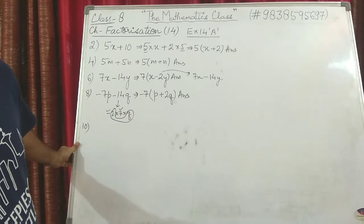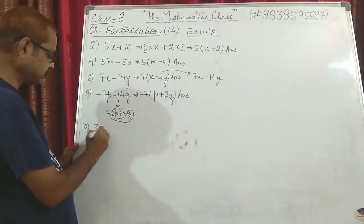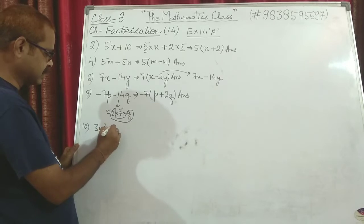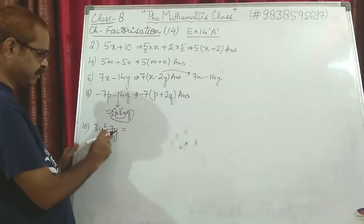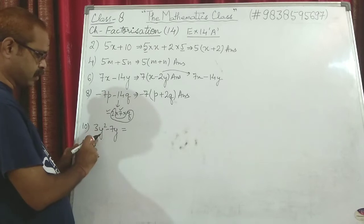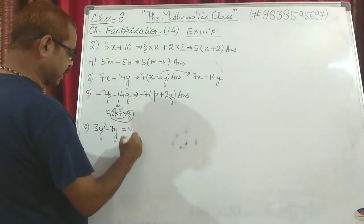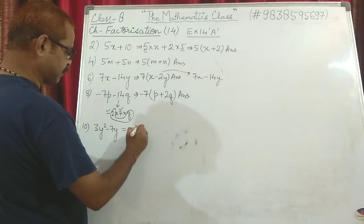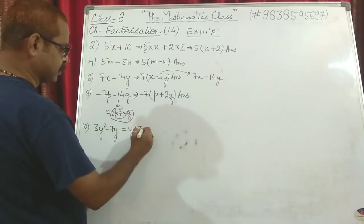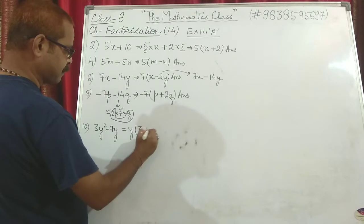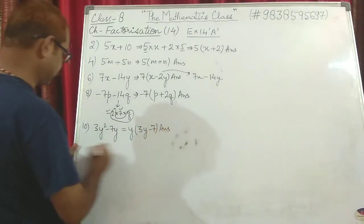Question 10: 3y² − 7y. You can see only y can be taken common, because 3 and 7 are prime numbers. When you take y common, from the first term 3 is left and 1y is left since it is y², so y remains. The answer is y(3y − 7).